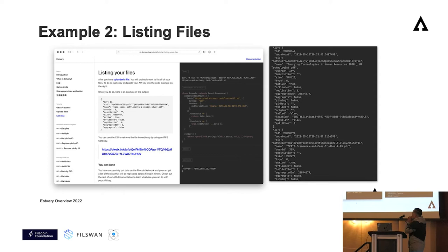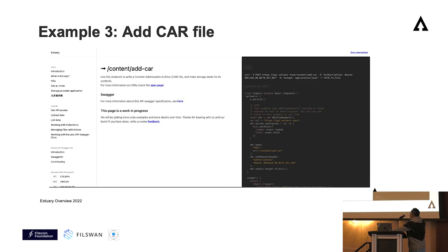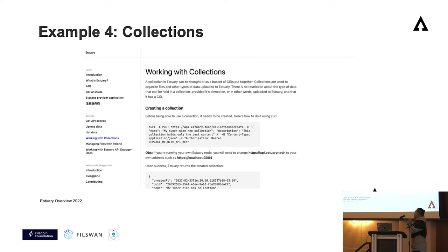If you're uploading a file, you want it to be retrievable and to list it. You just need to call the endpoint content slash content slash list, passing the authorization key, and you'll get your list of files. Similarly for CAR upload, you can upload a content addressable archive through the endpoints — call slash content slash add-car, pass the authorization header, and you're good to go. There is also a collections API, essentially a tagging mechanism. If you have files you want to group together like a hashtag for your files, you can use the collections API to add metadata.